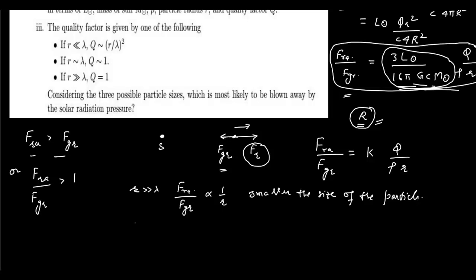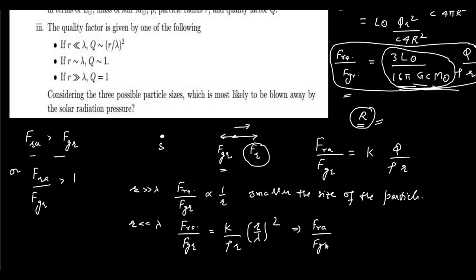When r is much less than λ, Q ≈ (r/λ)², so substituting gives F_radiation / F_gravity proportional to r. This means the larger the particle size in this regime, the more likely it is to be blown away. Increasing r in this regime also drives r toward λ.